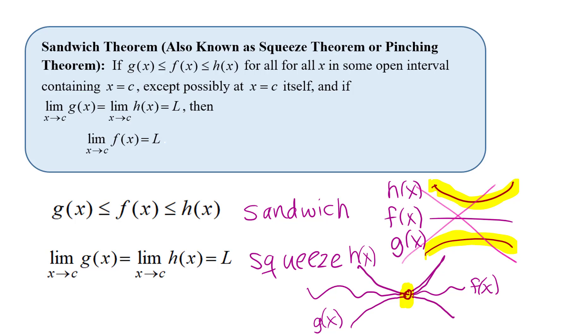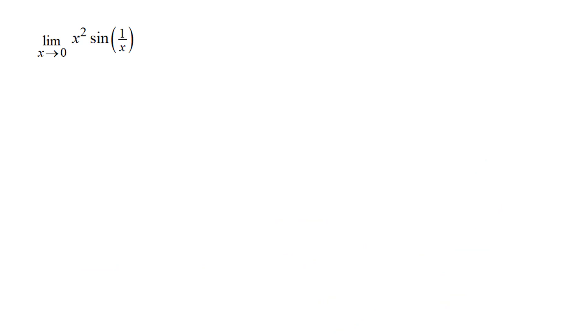The conclusion of the theorem tells us: if h(x) and g(x) sandwich f(x), and h(x) and g(x) squeeze to the same point, then the limit as x approaches c of f(x) must also be squeezed in between and equal that same value. Now let's go back to the example and look at how to use sandwich theorem to determine the value of that limit.